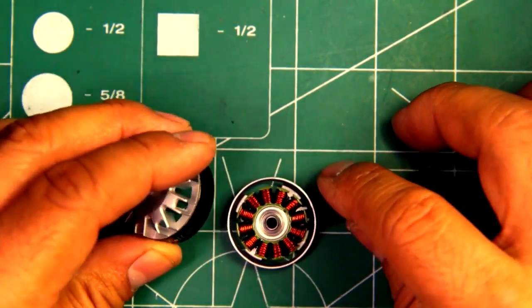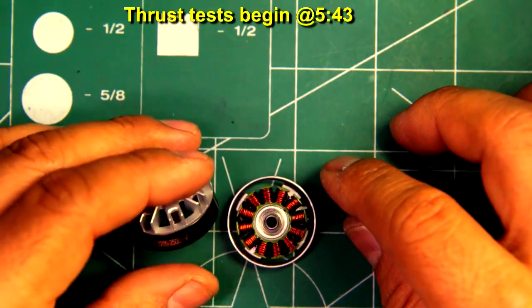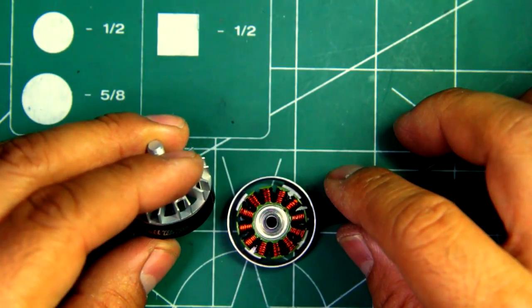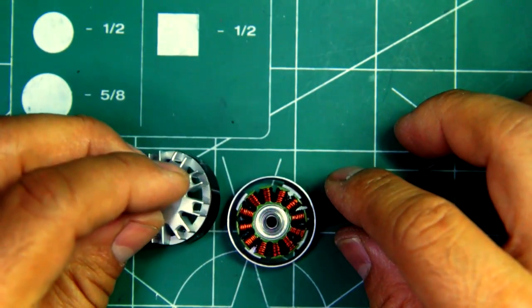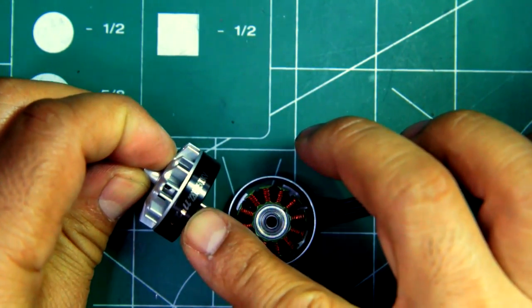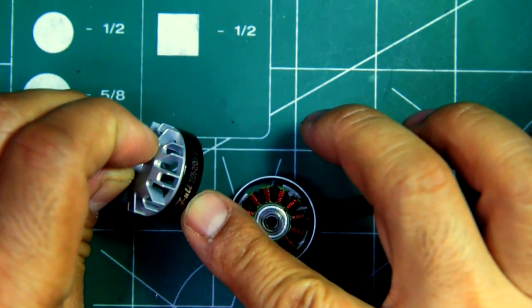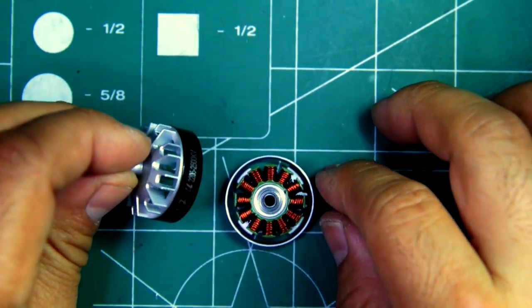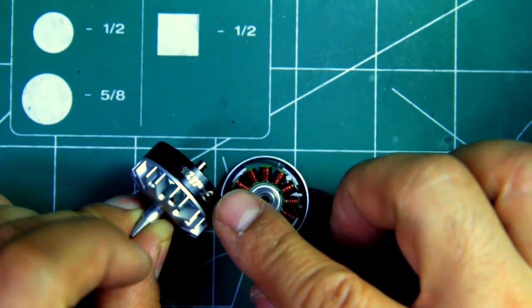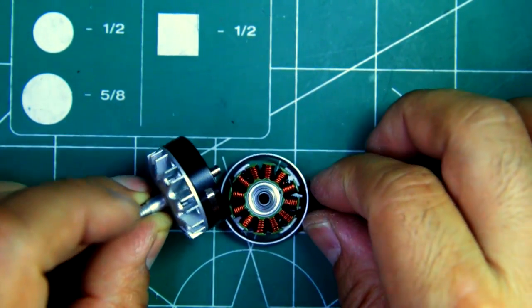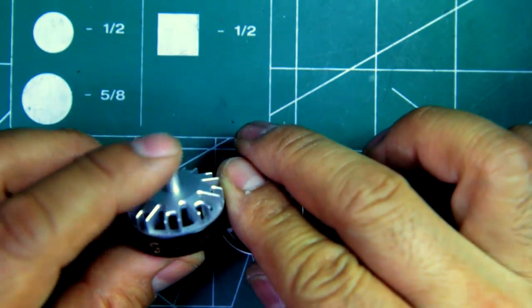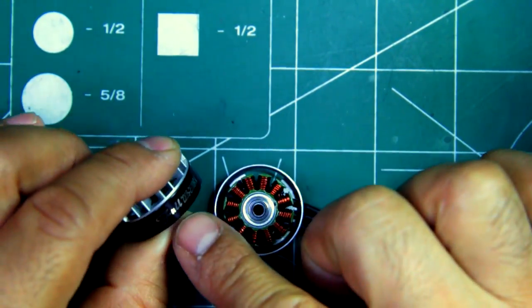All right, so here we have the new Brother Hobby Tornado T1 2205-2500 case. Although it says 'full' right there, F-U-L-L, doesn't say T1, so I don't know if they're going with a different name for this series of motors, but it certainly looks like a Tornado T1, so I'm just going to call it Tornado T1, even though it says full right there.